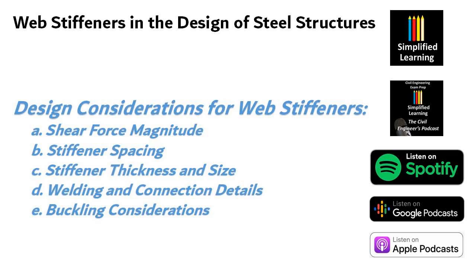The next factor is welding and connection details. The welding or bolting of stiffeners to the web requires careful attention to detail. Proper welding technique and material compatibility are essential to achieve strong connections and prevent premature failure. Next is buckling considerations. Web stiffeners themselves can be susceptible to buckling under compression. Engineers must analyze and design stiffeners to prevent buckling failure and ensure their stability under various loading conditions.